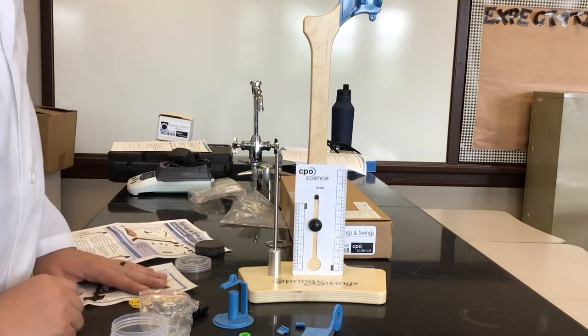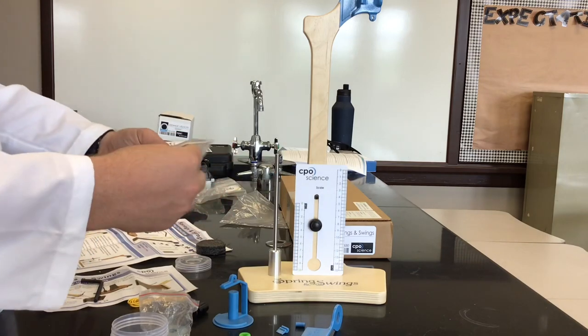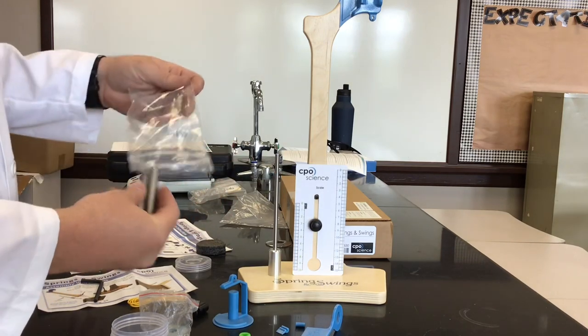You screw on your scale right on the front and you're good to go. This one has a couple of different springs for you to do different experiments. We actually have three springs, I'll show you those.